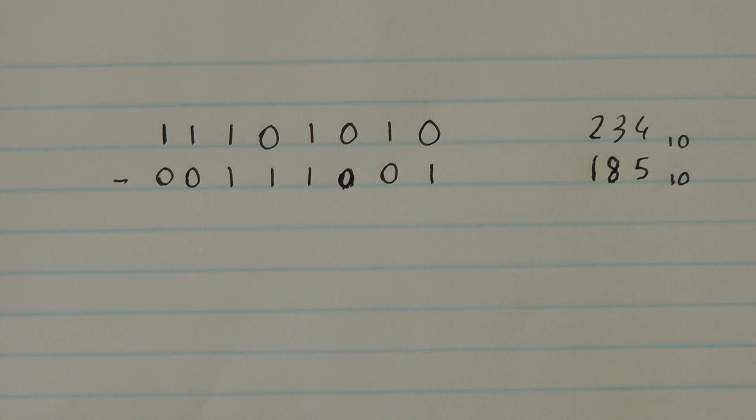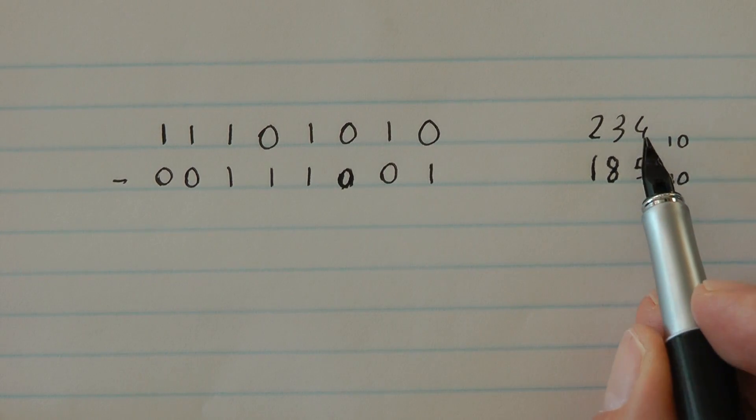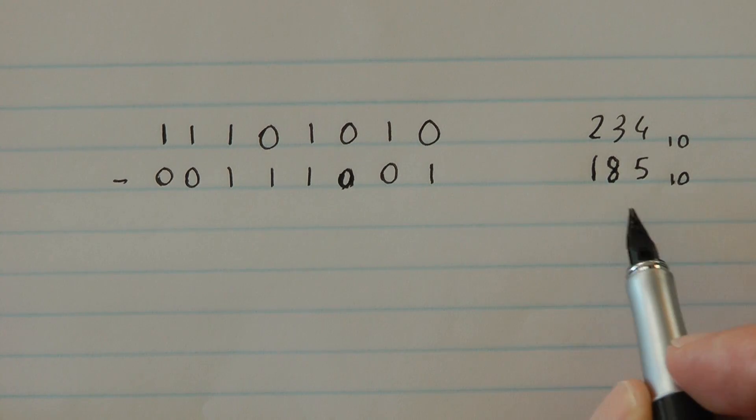So let's do another calculation with bigger numbers. We've got 234 in base 10 minus 185 and these are the 8-bit binary numbers.